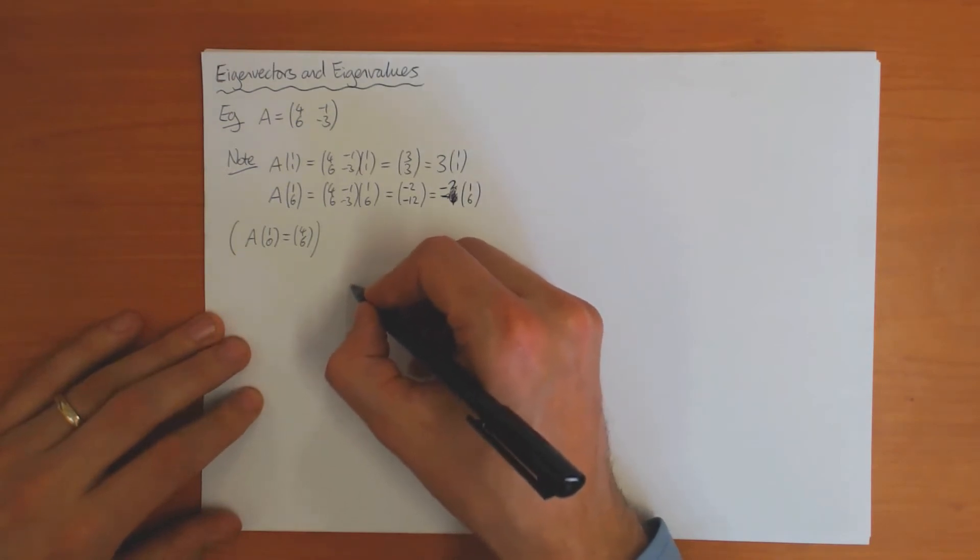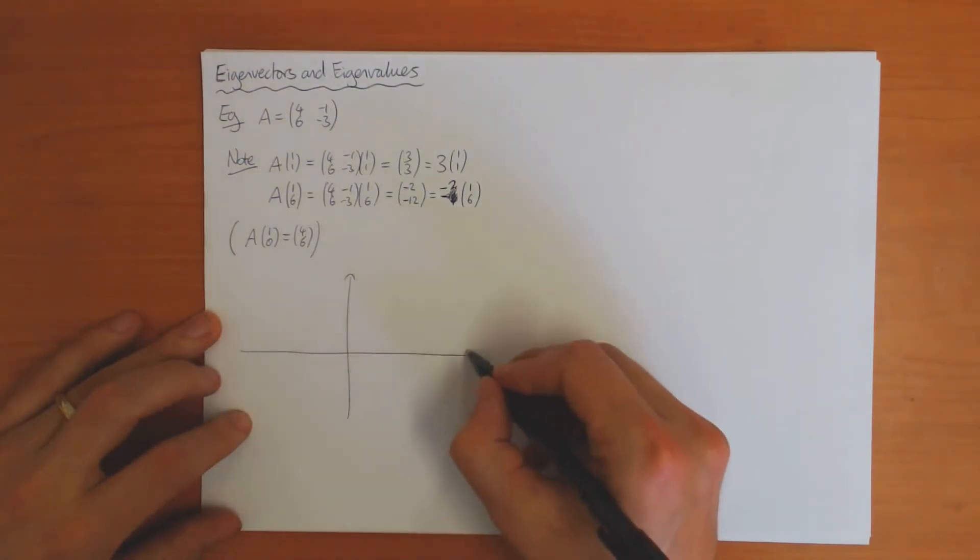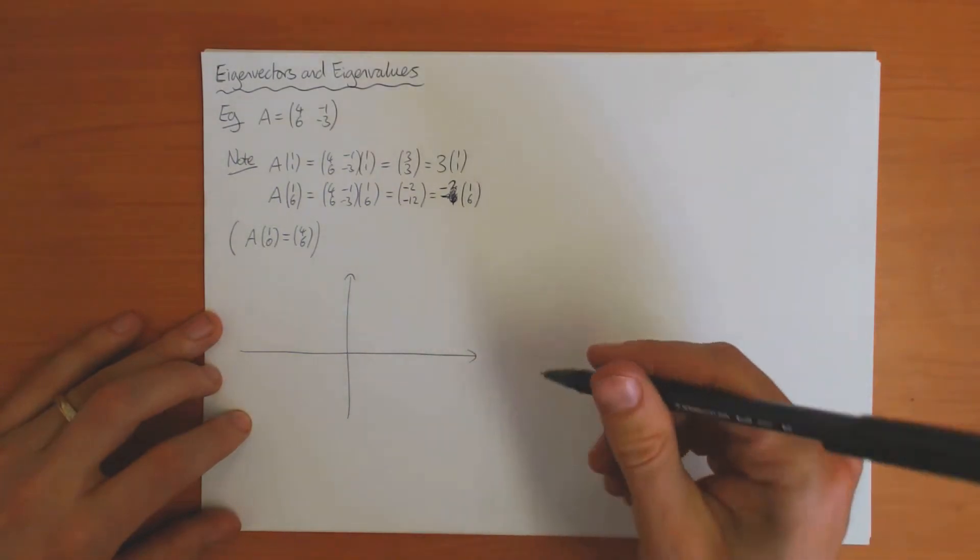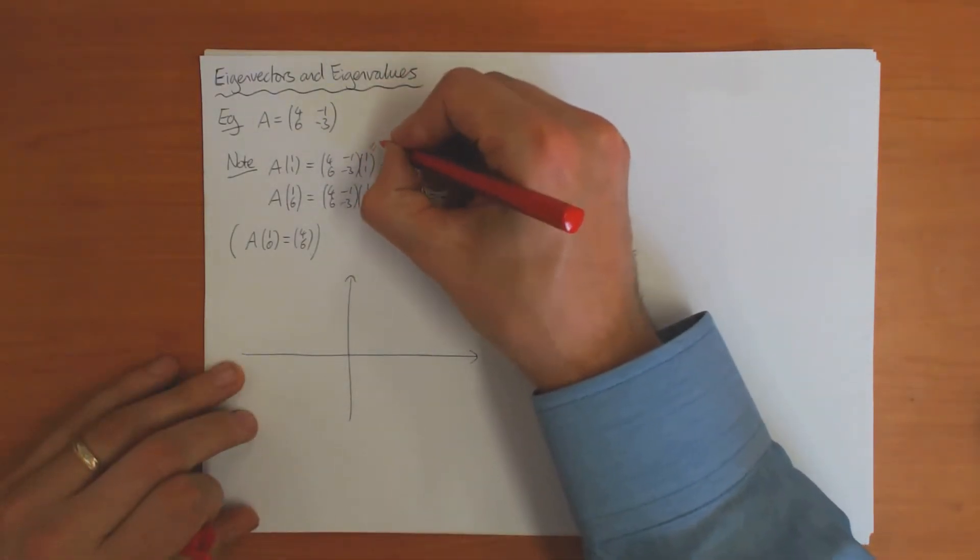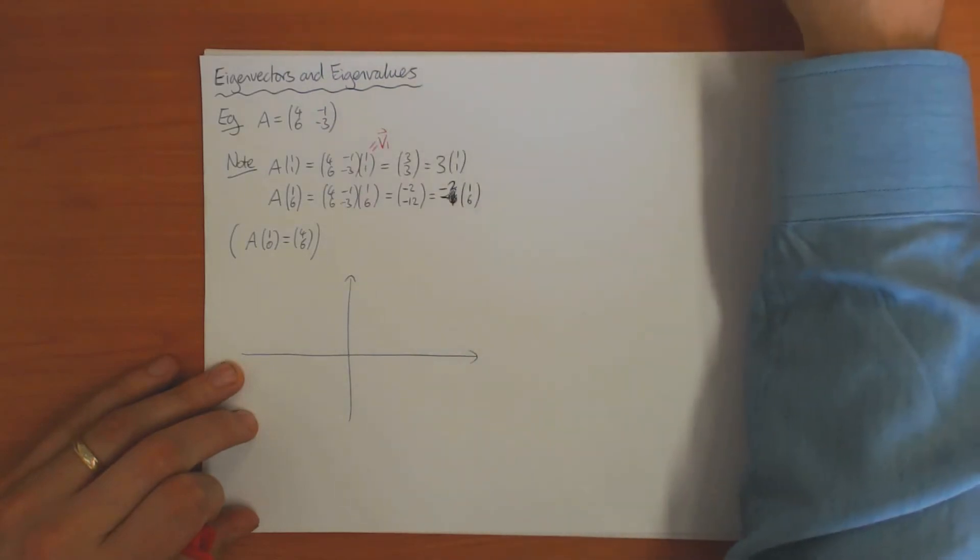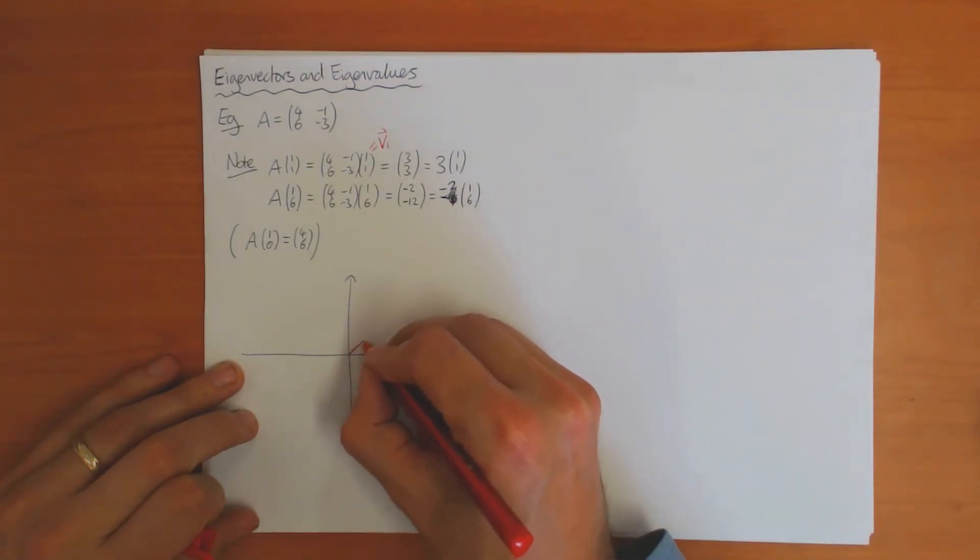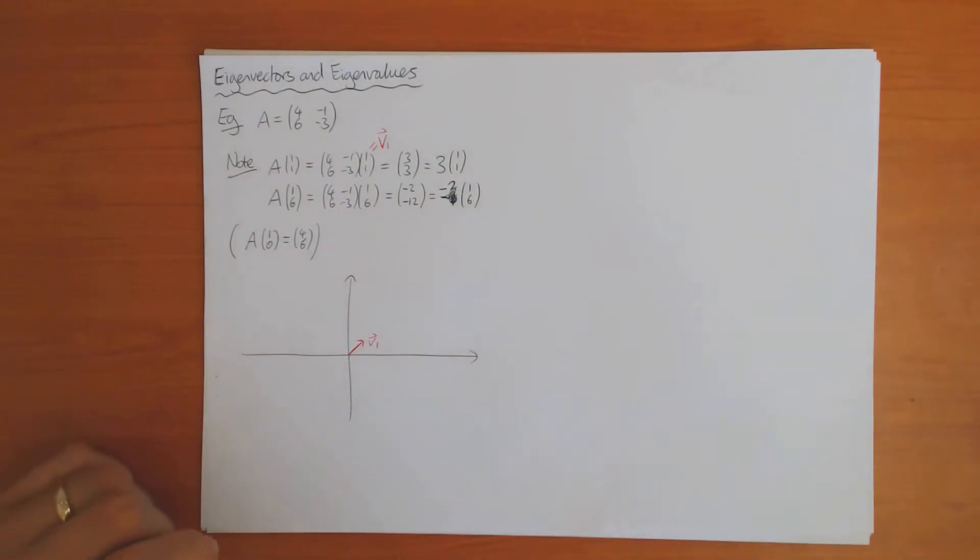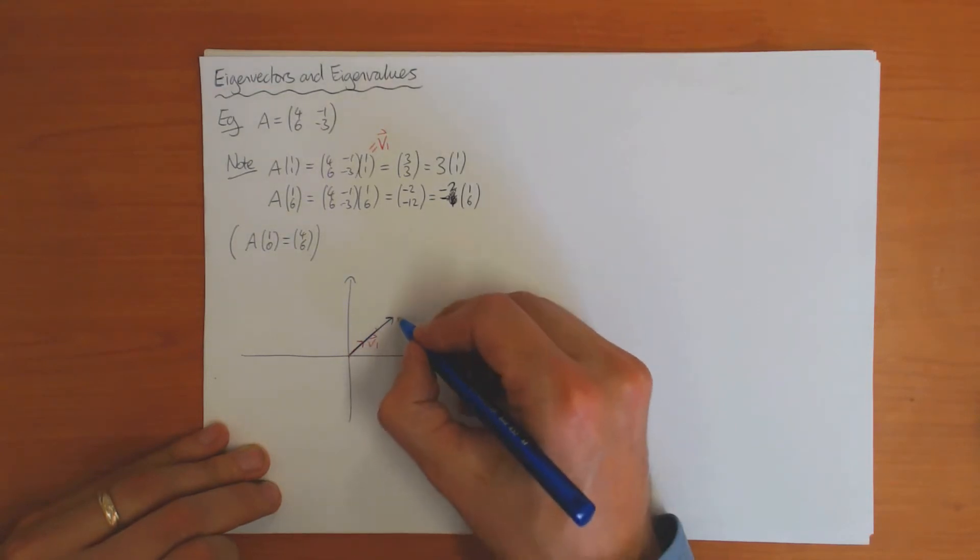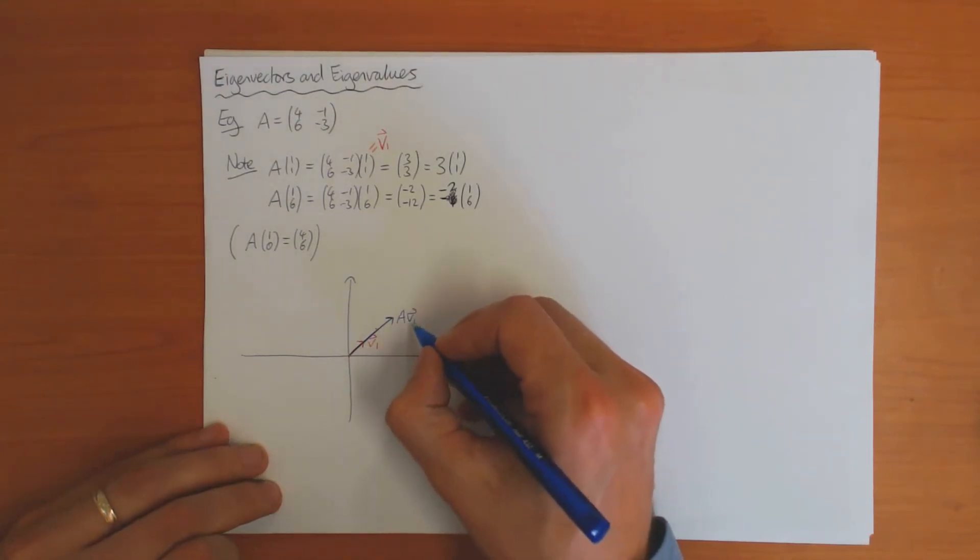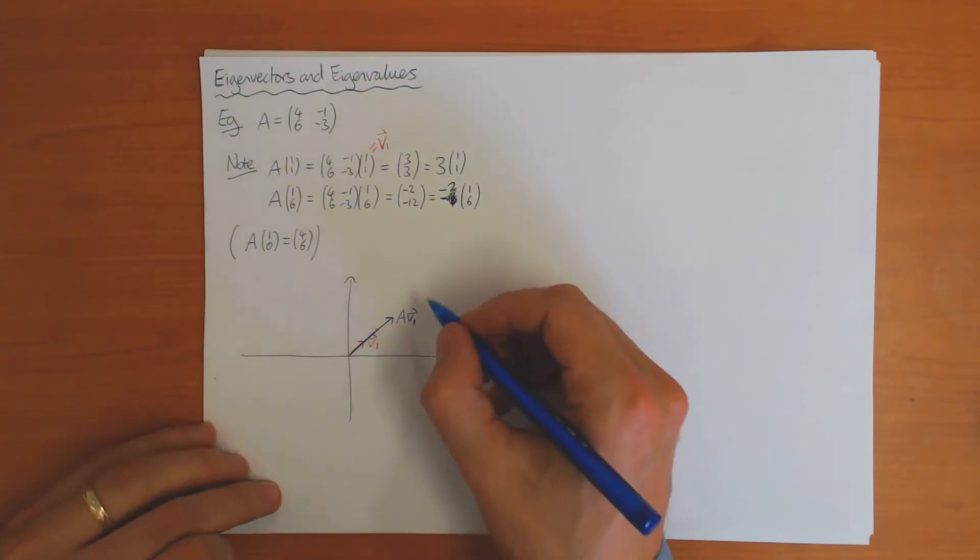I can draw this in a picture. Here's my two-dimensional space. The vector v₁ = (1,1) looks something like this. Here is v₁, and we know that after the transformation it is multiplied by 3. After the transformation it's the same vector but just three times longer, so it'll be like this. That's Av₁. You notice they are parallel—the two vectors point in the same direction.